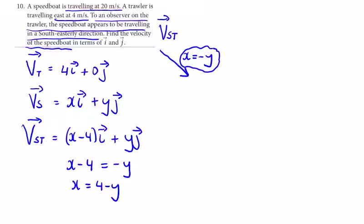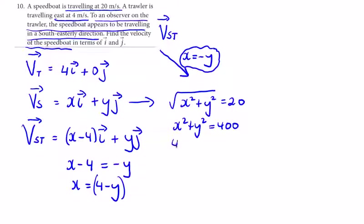Now what else do we know? We know the speed of the speedboat is 20 meters a second, so we can say that the square root of x squared plus y squared has to be equal to that 20, the magnitude of the velocity. So we can say that x squared plus y squared is equal to 400, or minus 400 is equal to zero. We have x in terms of y, so fill it in, 4 minus y.